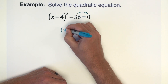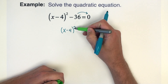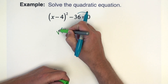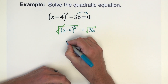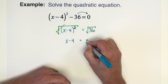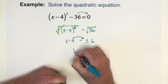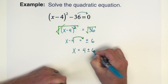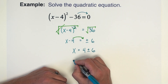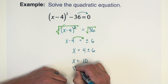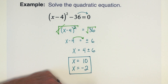The next problem: I move 36 to the other side, giving me (x - 4)² = 36. This has a squared exponent, so I take the square root of both sides — the square cancels, giving me x - 4 equals plus or minus 6. Adding 4 to both sides gives x equals 4 plus or minus 6. Working those out: 4 + 6 = 10, and 4 - 6 = -2, so our two solutions are x = 10 and x = -2.